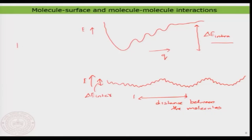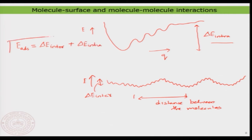In general, the total adsorption energy would be a sum of delta E inter plus delta E intra. That remains the same, but the point is that to understand delta E inter and delta E intra, it is a bit more complex because one needs to consider more possibilities to finally write down the adsorption energy — because adsorption energy tells you how strongly the molecule is binding onto the surface and also within the self-assembled pattern or self-assembled ad-layer on the surface.